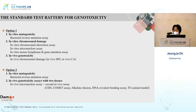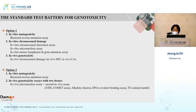Under in vivo genotoxicity, there is a test for chromosome damage — in vivo micronucleus assay. For option two, there is no in vitro cell test. For mutagenicity, the bacterial reverse mutation assay is used, and for in vivo, it is based on the micronucleus assay. As a second assay, the comet assay or DNA covalent bonding assay can be used.